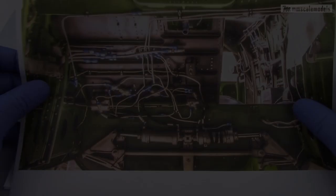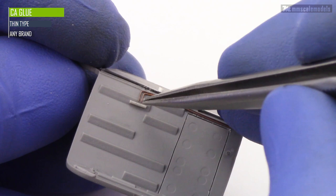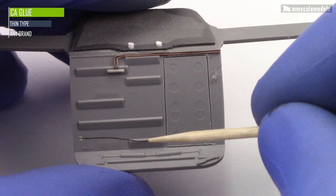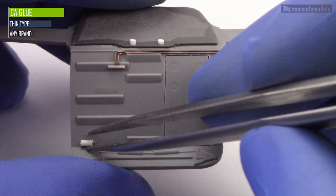And now it is time to start the plumbing extravaganza. This time the copper wire was kindly donated by an inductor as it has a bit larger diameter. As usual CA glue and some accelerator should do the bonding job.